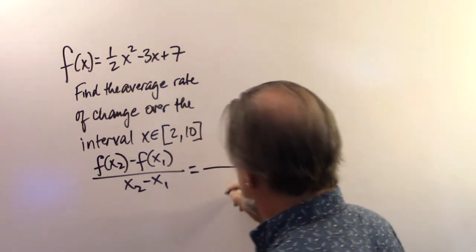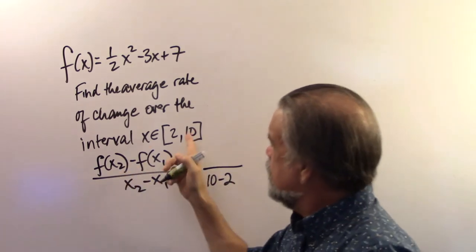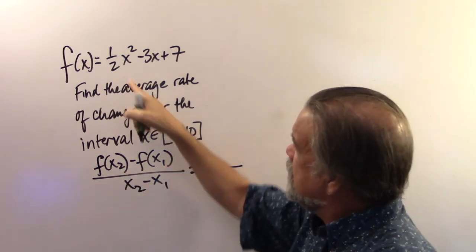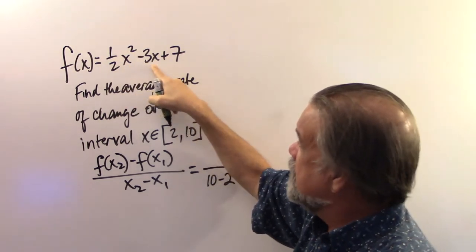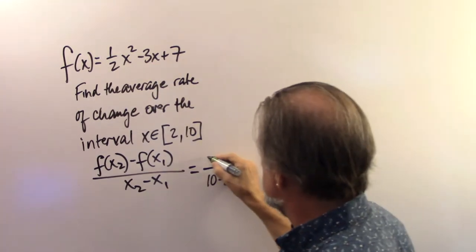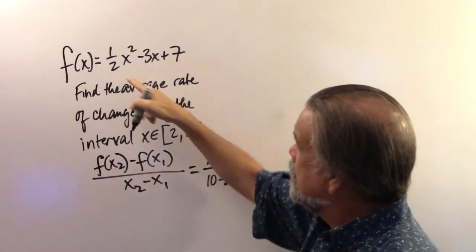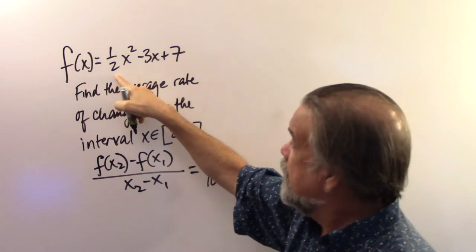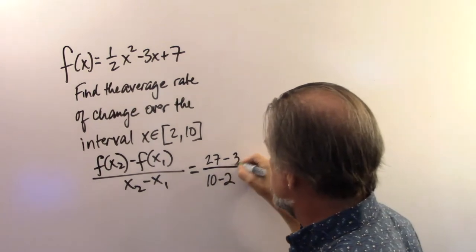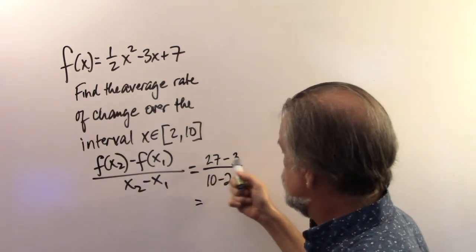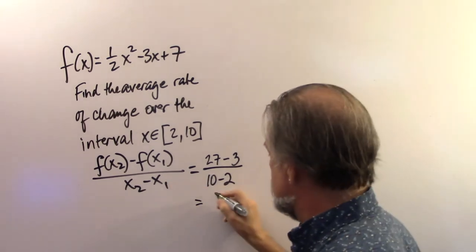So x2 minus x1 is going to be 10 minus 2. And let's see, f(x2), that's going to be f(10). So 10 squared is 100, half of that is 50, minus 30 gets me 20, plus 7 is 27. So this is 27 minus... Now I have to do f(2). 2 squared is 4, half of that is 2, minus 6 is going to get me negative 4, plus 7 is 3. So I end up with 27 minus 3, which is 24, over 10 minus 2, which is 8. And 24 divided by 8 is 3.